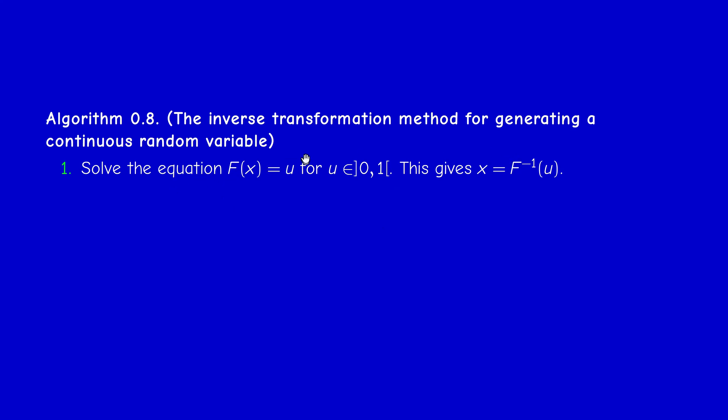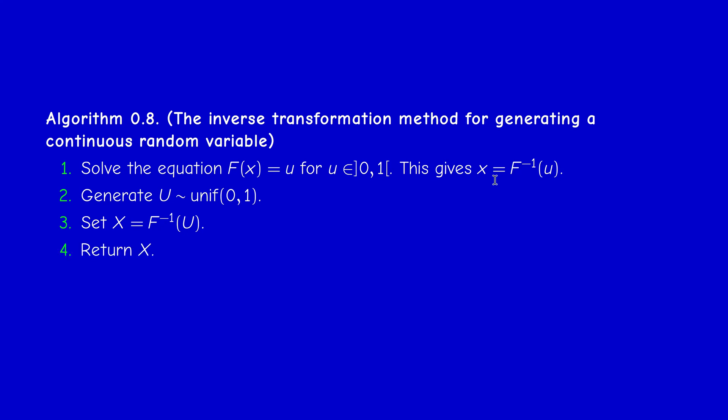This preliminary work done on paper gives you F⁻¹. Next, generate a uniform random number between zero and one — we know how to do that. Then simply apply F⁻¹, which is just a function at that point. This is the main algorithm using the inverse transformation method for generating a continuous random variable. Let us see some examples.